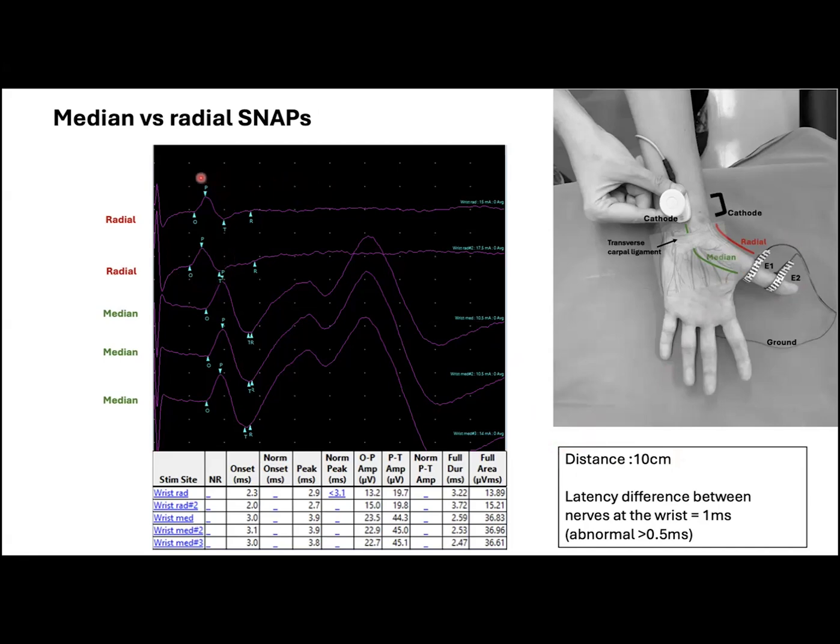Here we can see an example of insufficient stimulation, where the radial snap has prolonged latency and reduced velocity, as compared to the second tracing, where a higher intensity produced normal responses.